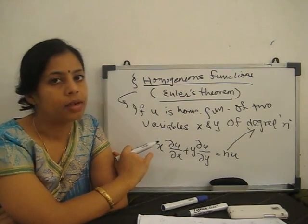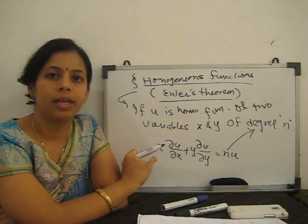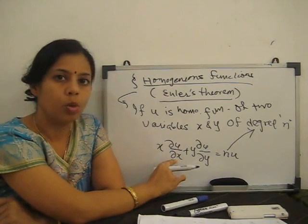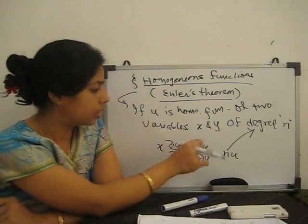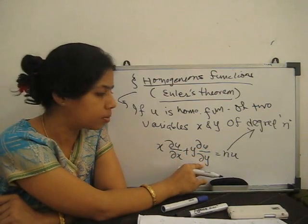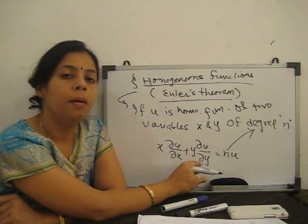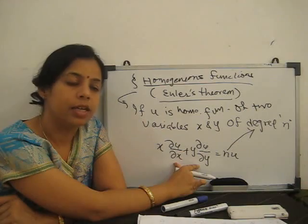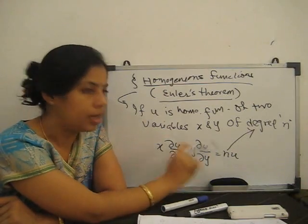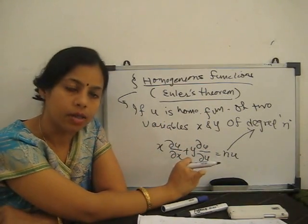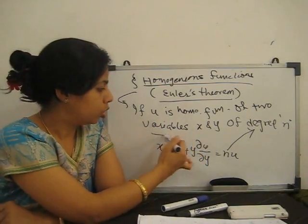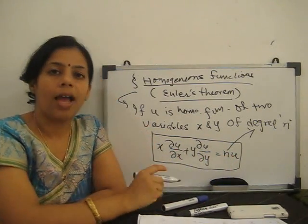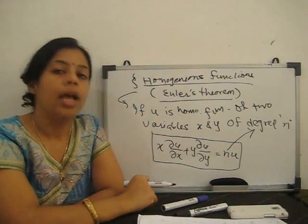So, if u is any function of x and y — two variables — then the partial derivative with respect to x multiplied by x, plus the partial derivative with respect to y multiplied by y, when we add these two terms it gives n times the whole function u. This is Euler's theorem for homogeneous functions.